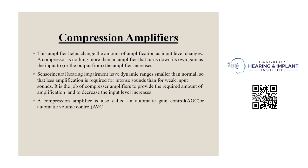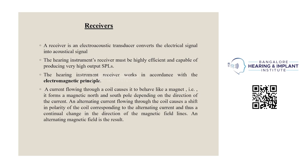Compression amplifiers: in hearing aids, compression (as opposed to peak clipping) is an amplifier that reduces gain as the input level increases. Individuals with sensorineural hearing loss have a dynamic range smaller than normal, so less amplification is required for intense sounds than for soft sounds. The compression amplifier provides the required amount of amplification, decreasing it as the input level increases. A compression amplifier is also called an automatic gain control (AGC) or automatic volume control (AVC).